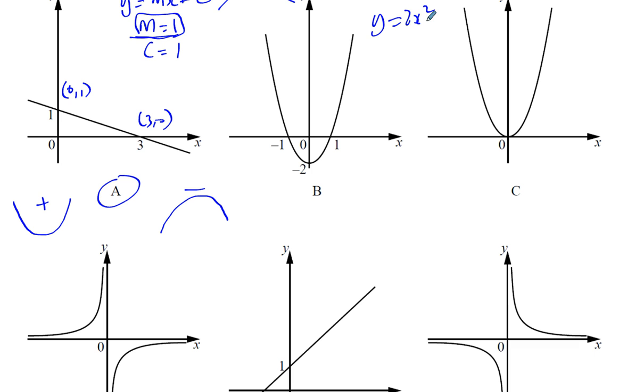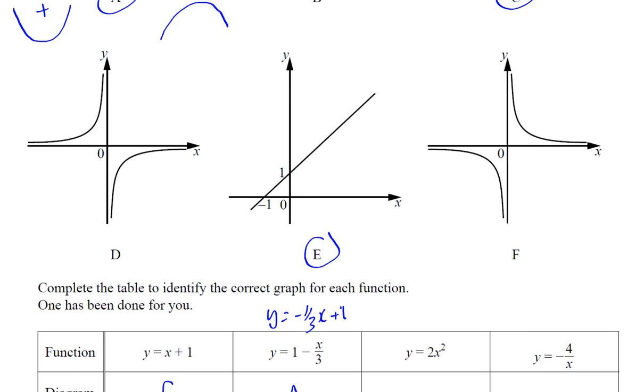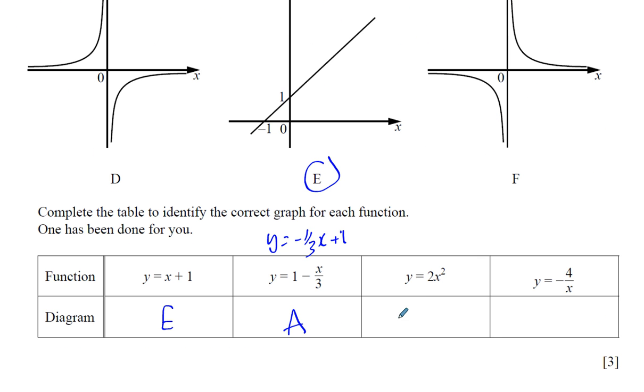We can see that when x is 0, y is 0. Now, this graph, when x is 0, y is minus 2. In this graph, when x is 0, y is 0, so it must be this one. So C must be y equals 2x squared. This would be y equals 2x squared minus 2. So that's going to be graph C.